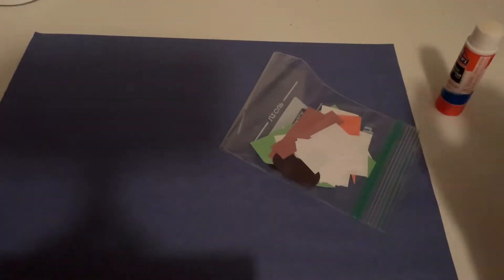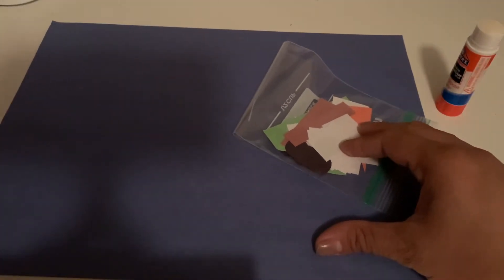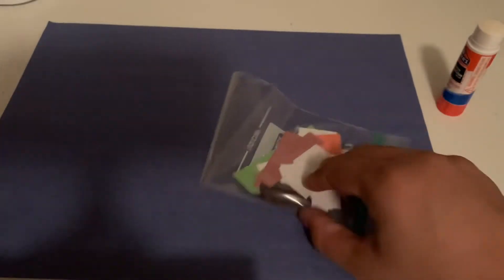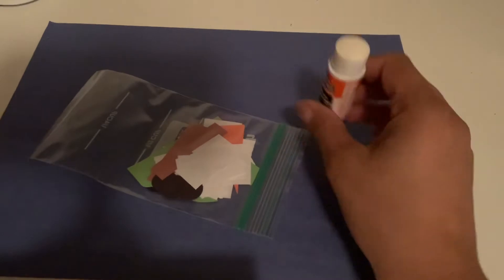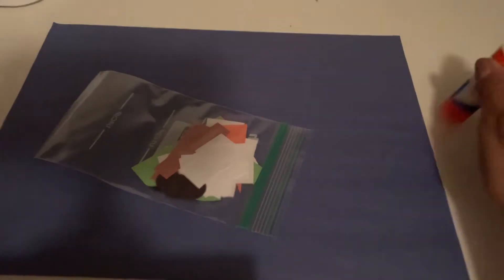Hey friends, it's Teacher Victoria. So today we're going to make our Melted Snowman Art Craft. We're going to need our little pieces in this bag, and then we're going to need our glue stick and our big piece of paper.